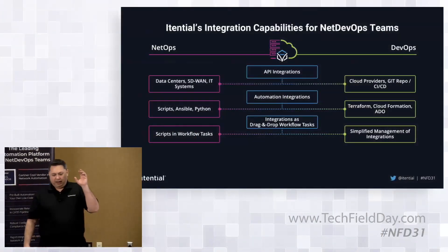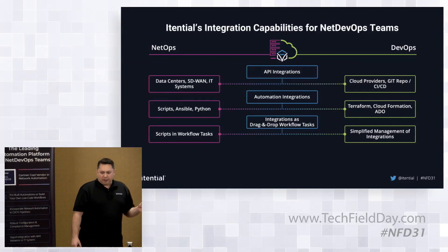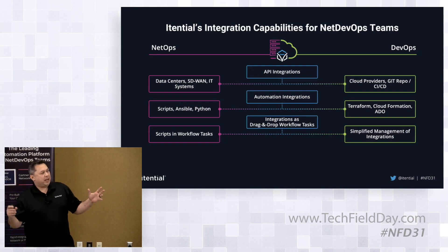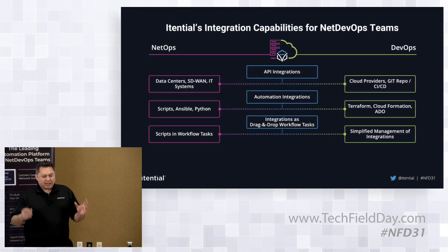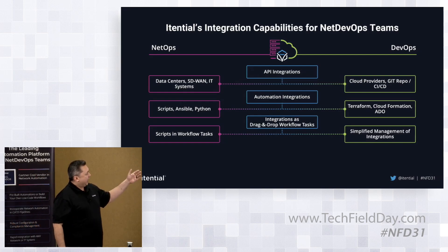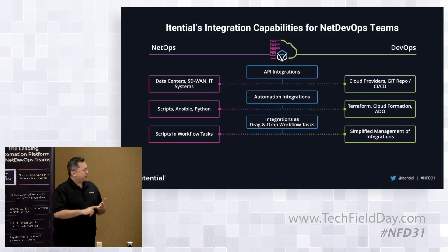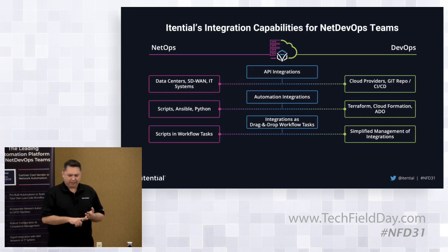As Chris mentioned earlier, the integration capabilities is where we're going to start here, because it's foundational. We first start with API integration, so all of the ecosystem that has APIs available for automation — we want to make it super simple for both NetOps teams looking at how to integrate their data center controllers, SD-WAN orchestrators and controllers, as well as how to automate their IT systems, IPAMs, ITSMs, things like that.